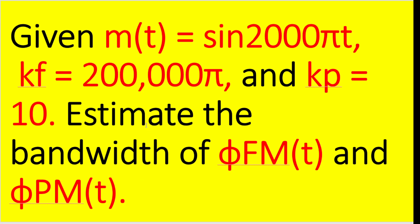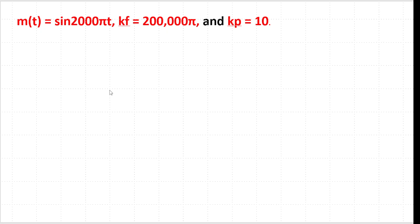Hello and welcome to Technically Explained. In this video we are going to solve another problem related to FM bandwidth and PM bandwidth. The problem states that m(t) is equal to sin(2000πt), kf is equal to 200,000π, kp is equal to 10, and we need to find the FM bandwidth and the PM bandwidth.